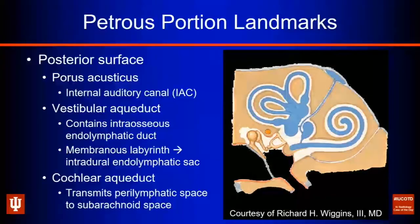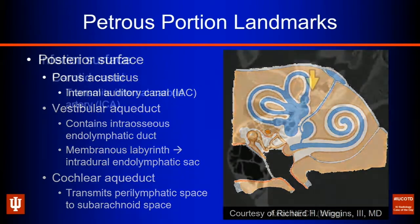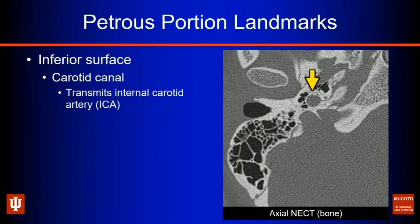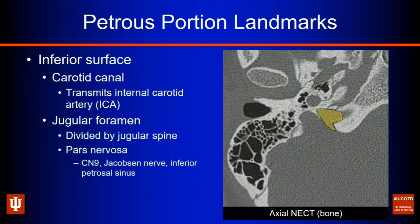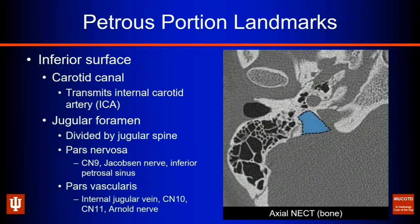Graphically, we see our endolymph surrounded by perilymph in white, which is continuous out to the subarachnoid space. Along the inferior portion of the petrous segment, we see the carotid canal — important because it transmits the internal carotid artery. Behind that is the jugular foramen, divided by the jugular spine into the pars nervosa medially and the pars vascularis laterally. There is some variation in what occurs in these spaces, but this is the classic teaching.